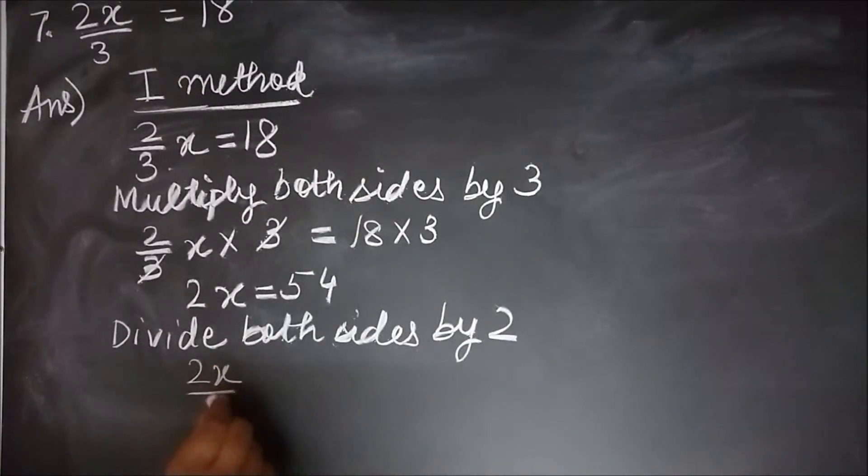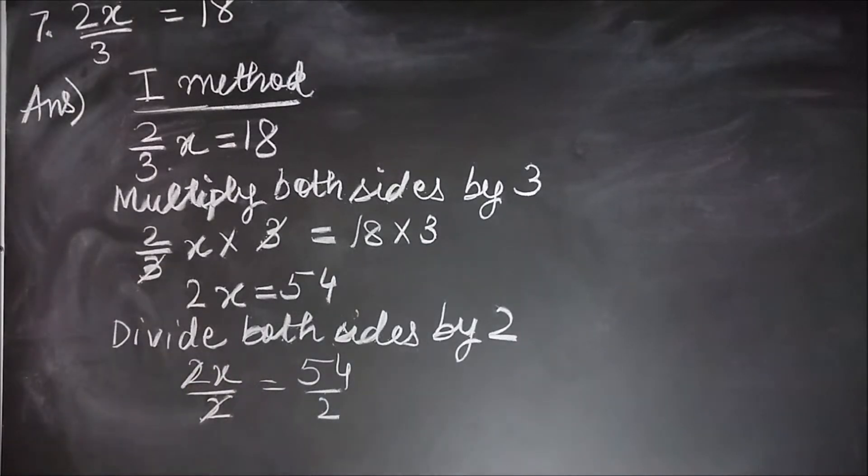2x by 2 equal to 54 by 2. 2 and 2 will get cancelled. Here 2 ones are 2, 2 twos are 4, 2 sevens are 14. So I will have x equal to 27 by 1, which is equal to 27.